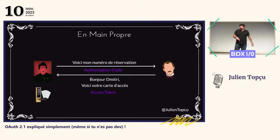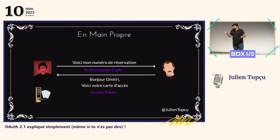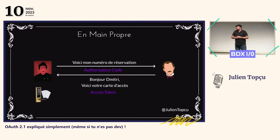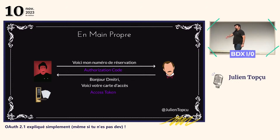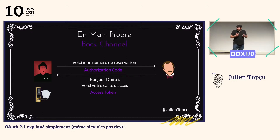Ce qui fait que si quelqu'un d'autre se pointe après avec l'authorization code, on lui dira : « Non, il a déjà été utilisé. Quelqu'un l'a intercepté, ça ne va pas. » Et l'access token, lui, va avoir son propre cycle de vie. Dans ce use case, ce serait jusqu'à la fin de la réservation de Dimitri. Alors que l'authorization code, ce serait jusqu'au début de sa réservation, par exemple. La remise en main propre, c'est un back channel.